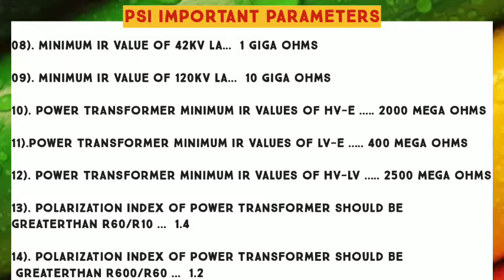Number 9: Minimum IR Value of 120 KV Lightning Arrester — 10 Giga Ohms. Number 10: Power Transformer Minimum IR Values of HV-A — 2000 Mega Ohms. Number 11: Power Transformer Minimum IR Values of LV-A — 400 Mega Ohms.